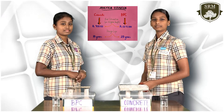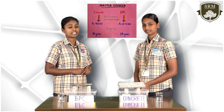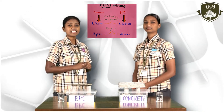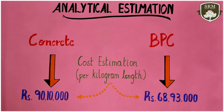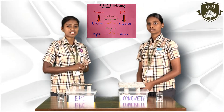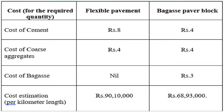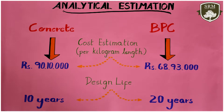For the economic analysis, let's compare flexible concrete and BPC. In cost estimation per kilometer length, normal concrete costs about Rs. 90 lakhs and 10 thousand, but BPC costs about Rs. 68 lakhs and 93 thousand, leaving a difference of Rs. 21 lakhs and 17 thousand — a significant reduction in construction cost. To make a block, the cost of cement per kg is about Rs. 8 for flexible pavement and Rs. 4 for BPC. Coarse aggregates cost Rs. 4 per kg for both. Bagasse, used only in BPC, costs about Rs. 3. The design life of flexible concrete is about 10 years, while BPC lasts about 20 years.